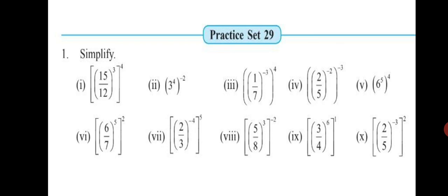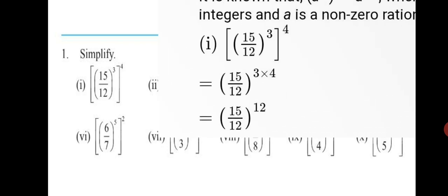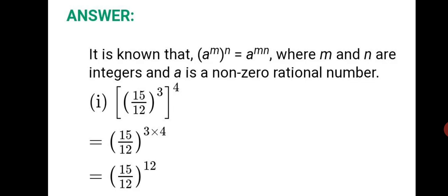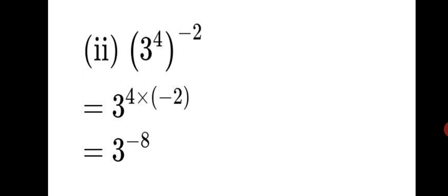Now let us move on to Practice Set 29, Question 1: Simplify. We have 10 questions. First: (15/12) raised to 3, the whole raised to the power of 4. We apply the formula (A^M)^N = A^(M×N). Keep 15/12 as it is and multiply 3 × 4 = 12, so the answer is (15/12) raised to 12. Second sum: 3 raised to 4, the whole raised to −2: 4 × (−2) = −8, so the answer is 3 raised to −8.